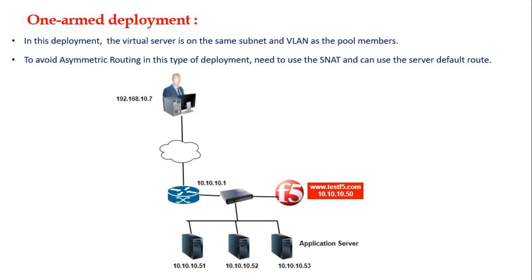As the name suggests, in one-arm deployment, the virtual server and the actual application server — also called pool members — will be in the same VLAN. That's the reason it's called one-arm deployment. There is a small drawback in this method, however there are ways to overcome it. Let's see in detail with this diagram how one-arm deployment works and how to overcome the drawbacks.